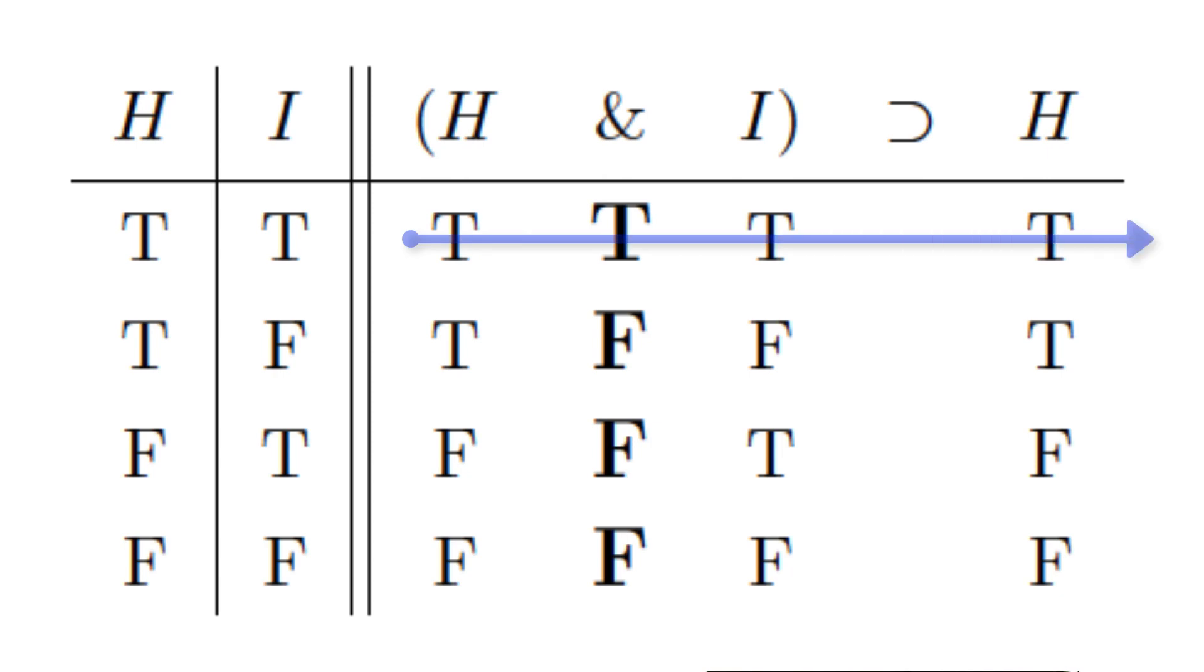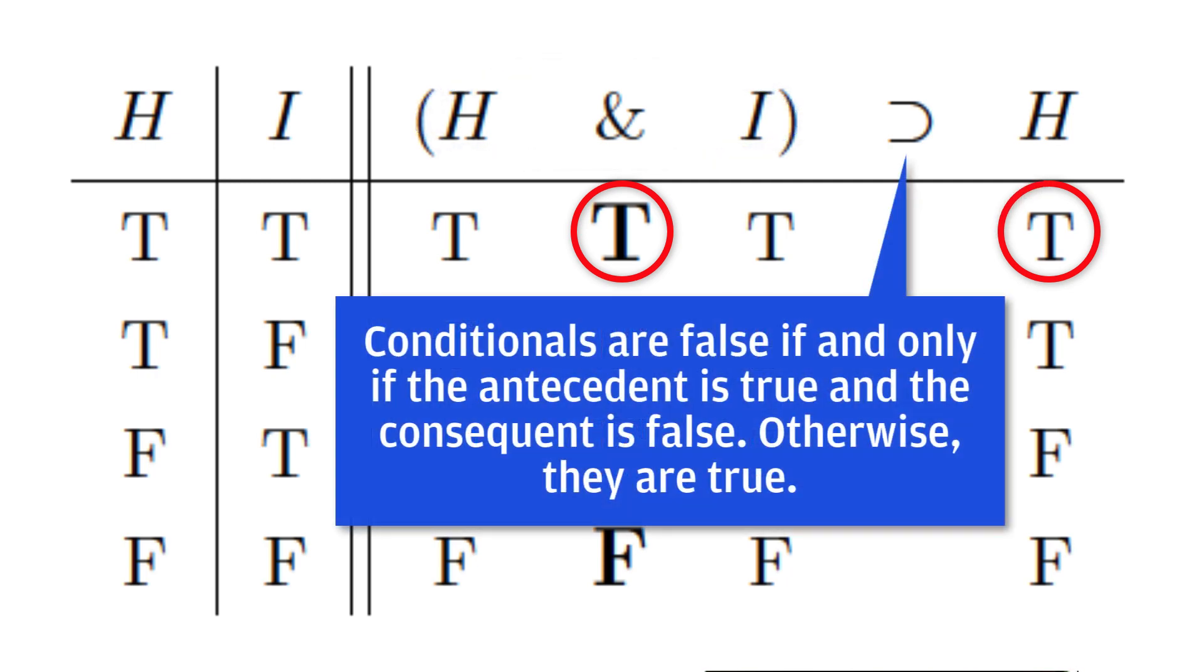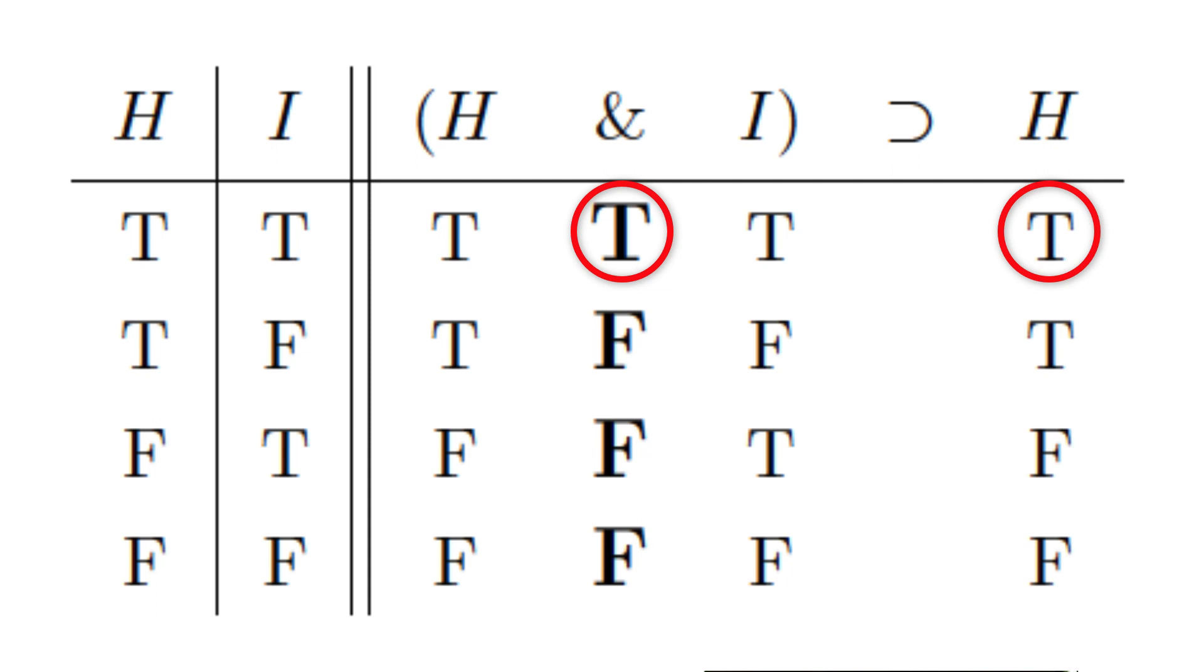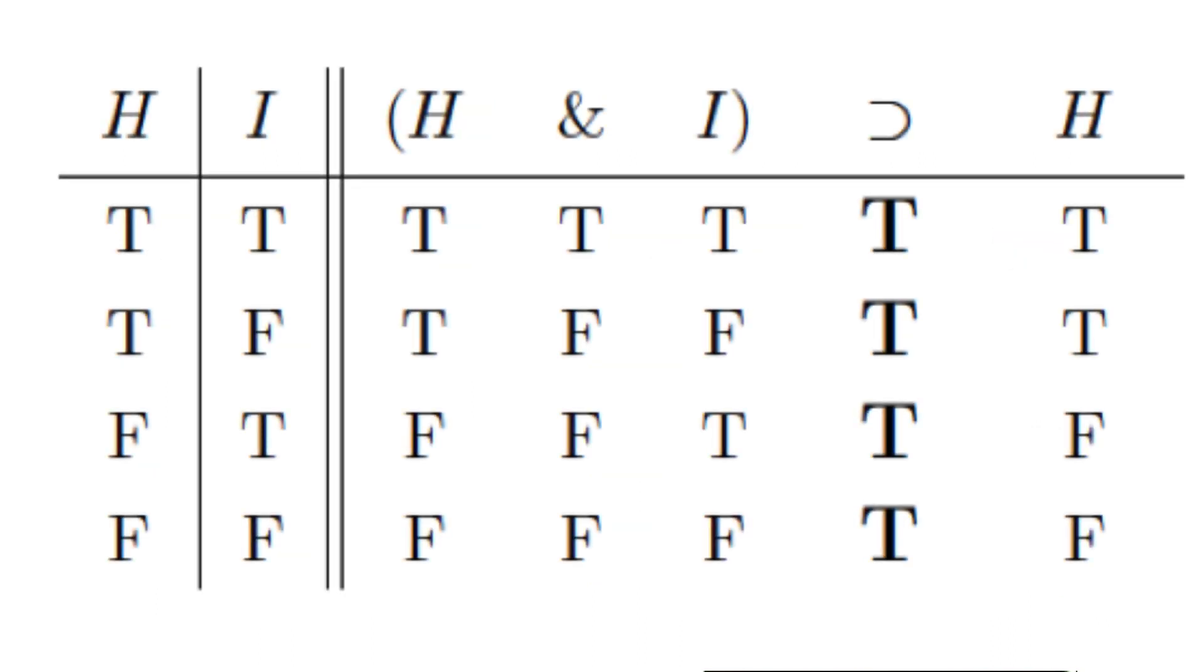For the first row, the sentence H ampersand I is true and the sentence H is also true. The rule for the conditional asserts that conditionals are false if and only if the antecedent is true and the consequent is false. That is not the case here. Filling in the rest of the column gives us the complete table.